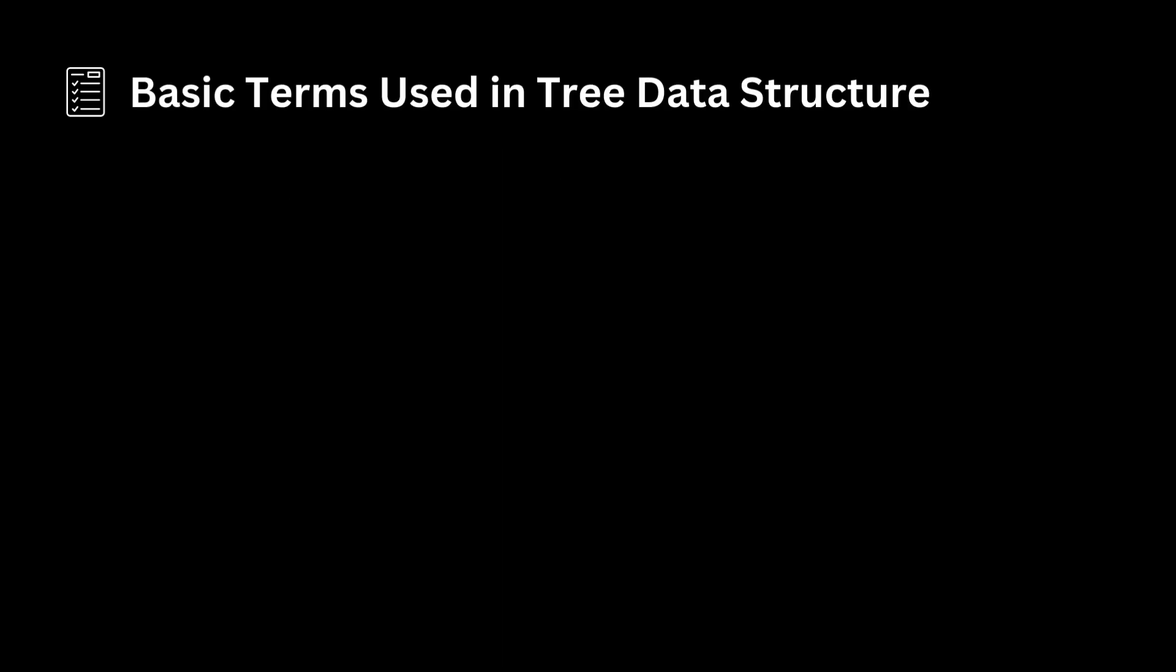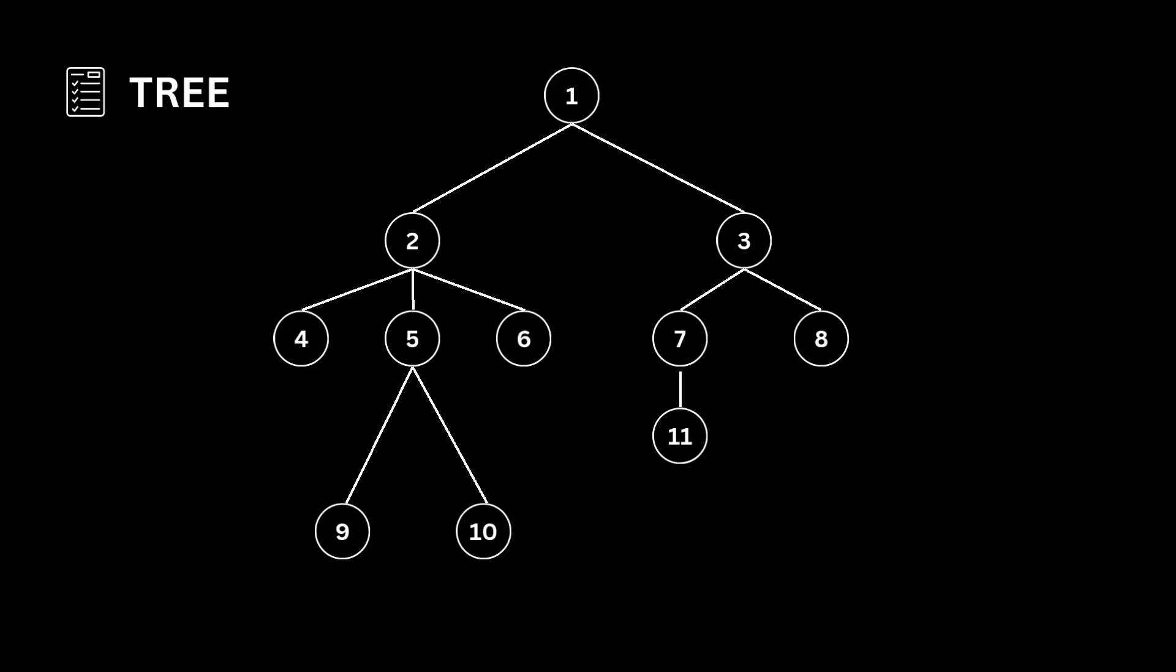Let us see some basic terms used in tree data structure. As you can see, each node in a tree here is labeled with some number. Each arrow depicted in the figure represents a connection between two nodes. The root node is the uppermost node in the tree hierarchy, meaning it is the node without a parent. In the tree shown here, the node numbered 1 is the root node of the tree.